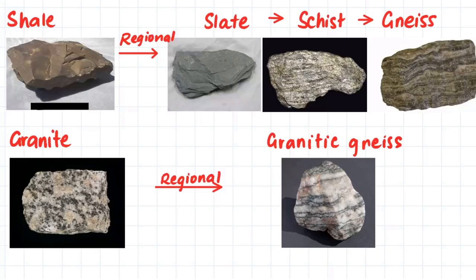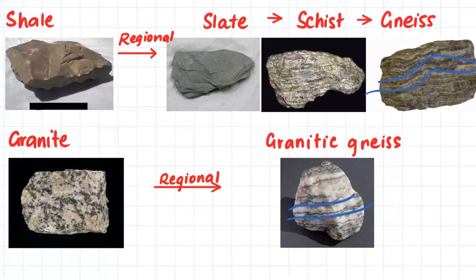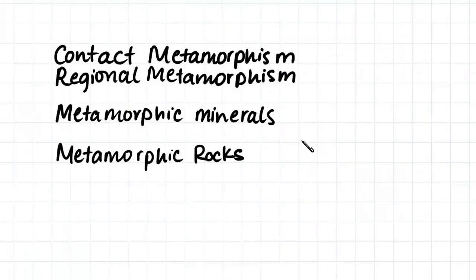Gneiss is a term used to describe the actual rock gneiss, which forms from the transformation of shale, but it's also used as a descriptive term to describe a rock that has foliation. Foliation refers to the stripes that we can see through the rock. These stripes form when the rock is subjected to a lot of pressure. So now we understand the two main types of metamorphism and the minerals that indicate metamorphism has taken place. In the next video we will talk about the terms we use to describe metamorphic rocks.